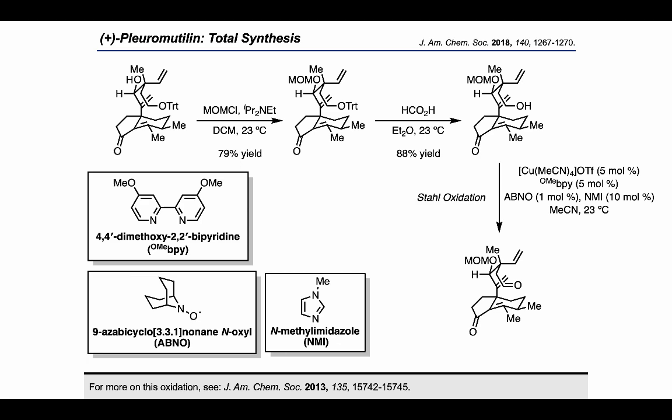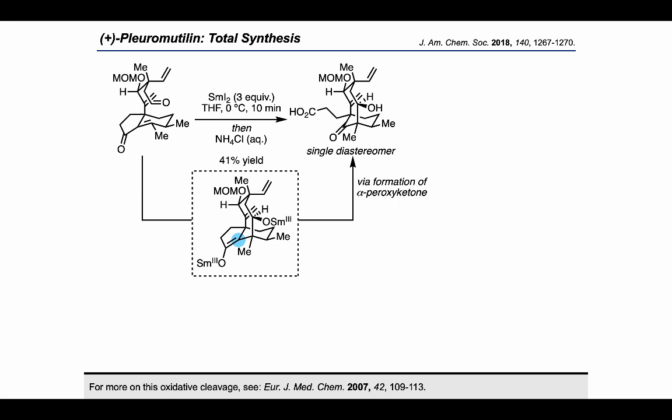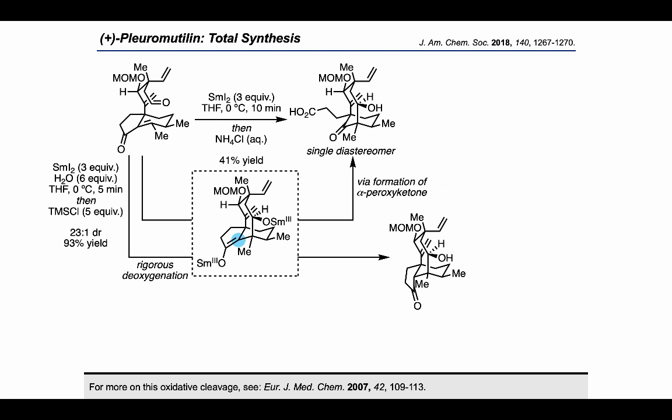At first, they found that treating with samarium diiodide in THF at zero degrees gave a ring-open product, which can be imagined to arise from a ketyl radical addition initiating on the aldehyde, providing a samarium enolate after a second one-electron reduction. The authors proposed that it is this enolate that leads to fragmentation when it encounters oxygen, forming an alpha-peroxy ketone that fragments to the observed product. With that understanding, they optimized the reaction conditions and, by carrying out the reaction under rigorous deoxygenation, were able to arrive at the desired radical cyclization product.